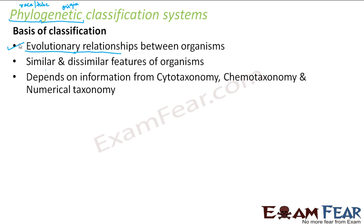This classification system depends on information from cytotaxonomy, chemotaxonomy, and numerical taxonomy. These are three different branches of taxonomy which help in gathering more information for phylogenetic classification, because fossils alone are not a very foolproof source of information. We will now talk about each of these — what is cytotaxonomy, what is chemotaxonomy, and what is numerical taxonomy, and how each of them helps in phylogenetic classification.